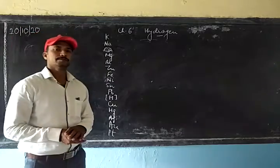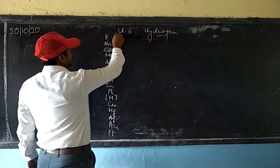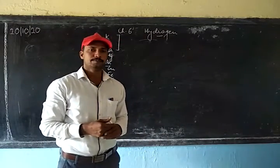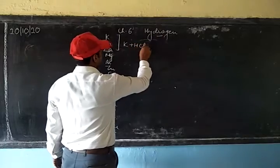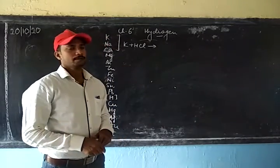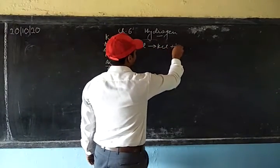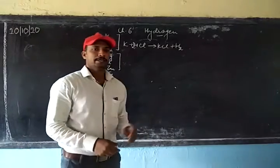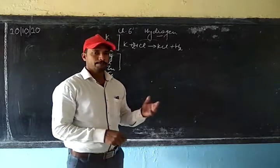Then we have copper, mercury, silver, gold, and platinum. These are the different metals generally put in the reactivity series. As far as their reaction with acids is concerned, sodium, potassium, and calcium will have a highly violent and vigorous reaction. This reaction is highly explosive, so it is not advisable to carry out this reaction at home.